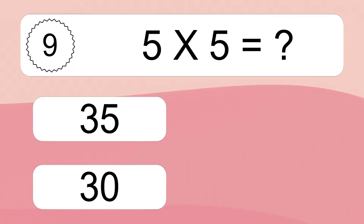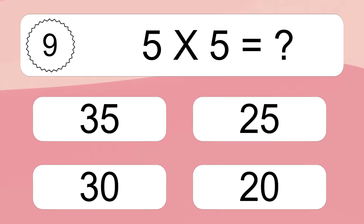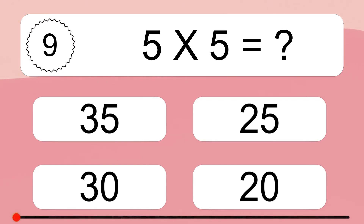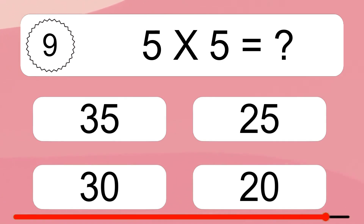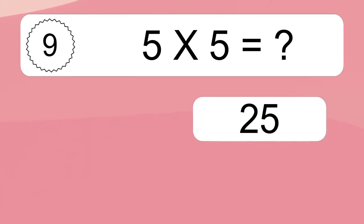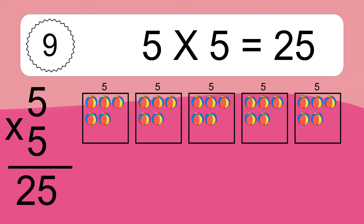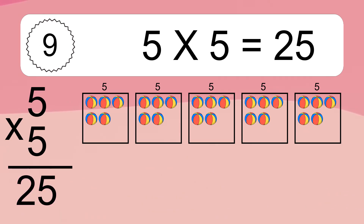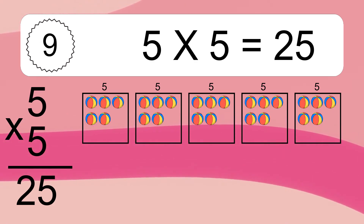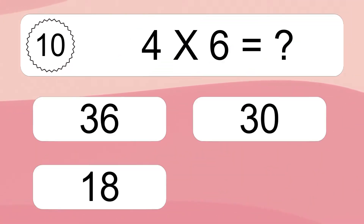5 times 5 equals what? 5 times 5 equals 25. We have 5 boxes and each box has 5 colorful balls inside. If you count all the balls in all the boxes together, you will have 5 times 5 balls. This equals 25 balls.